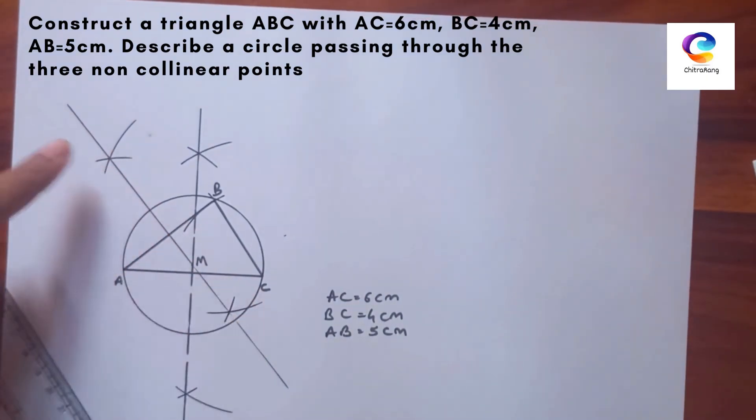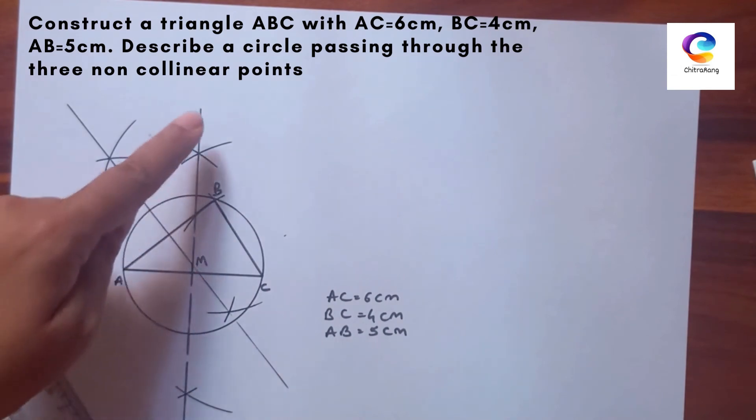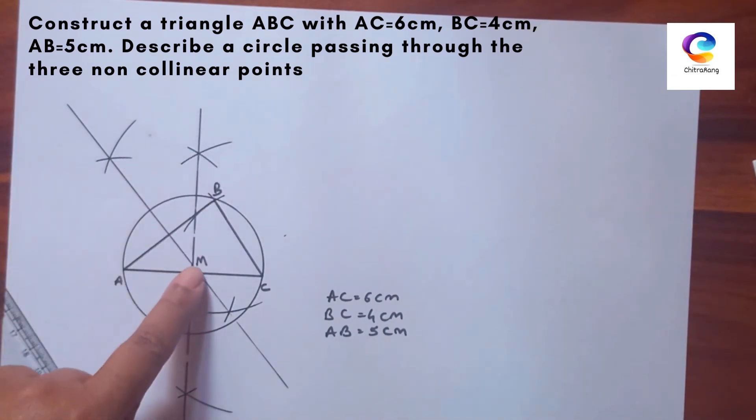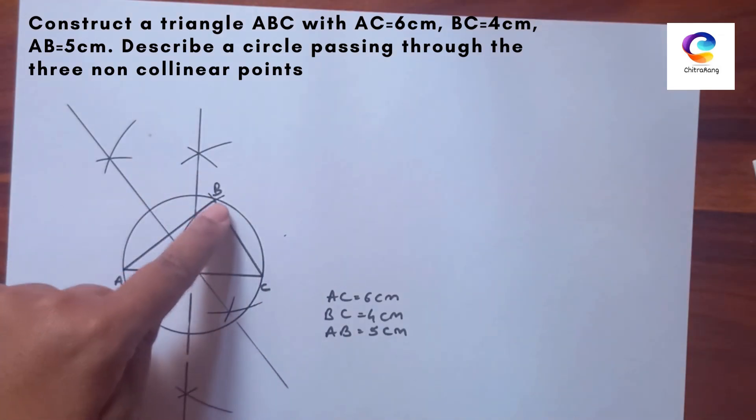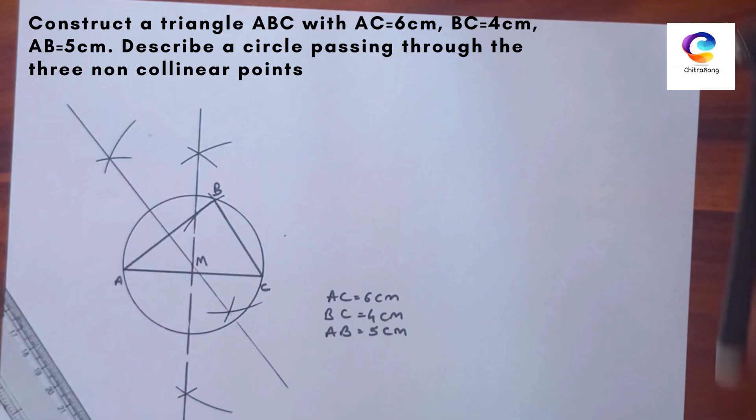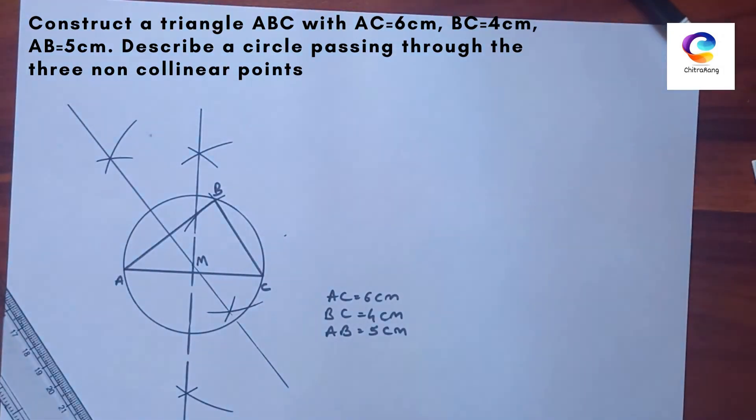When we bisect AB and AC, we get this intersecting point of these two lines. From this point, we give the name M. From this point to A, take the distance for radius and then draw a circle which exactly crosses through these points. This is the required circle passing through three non-collinear points.